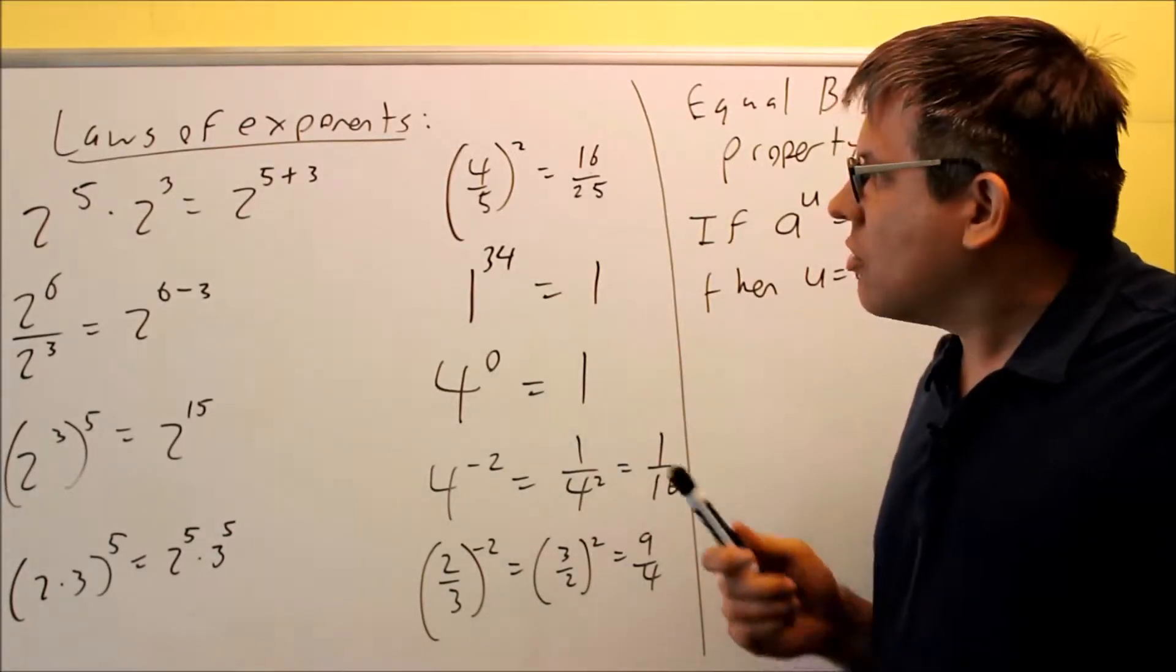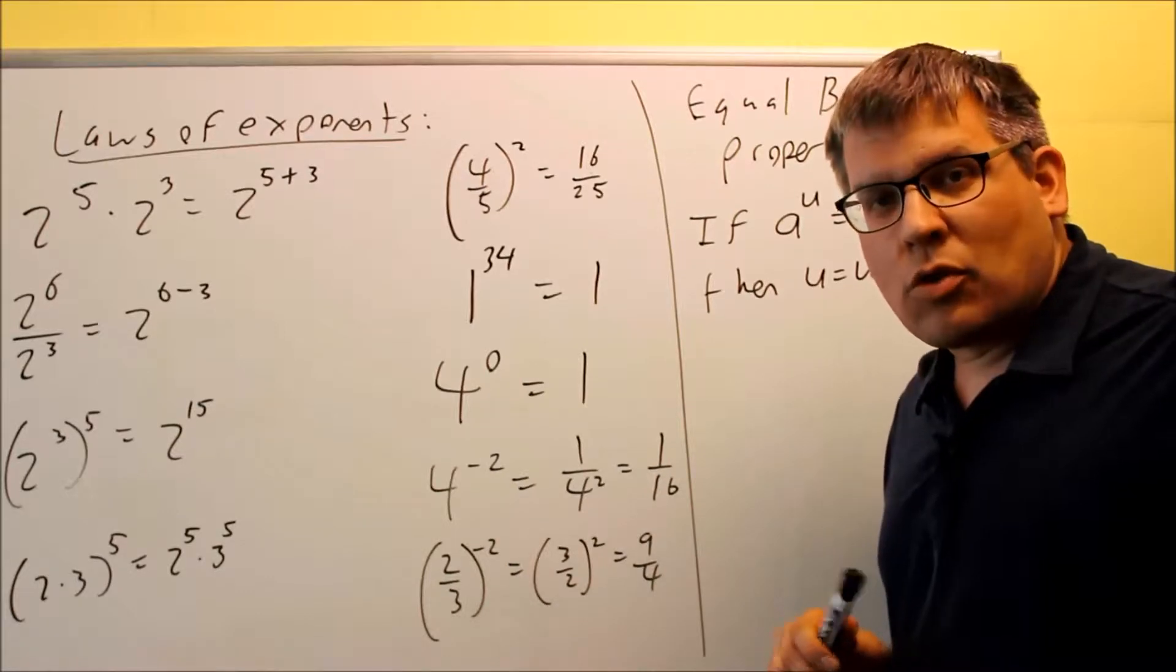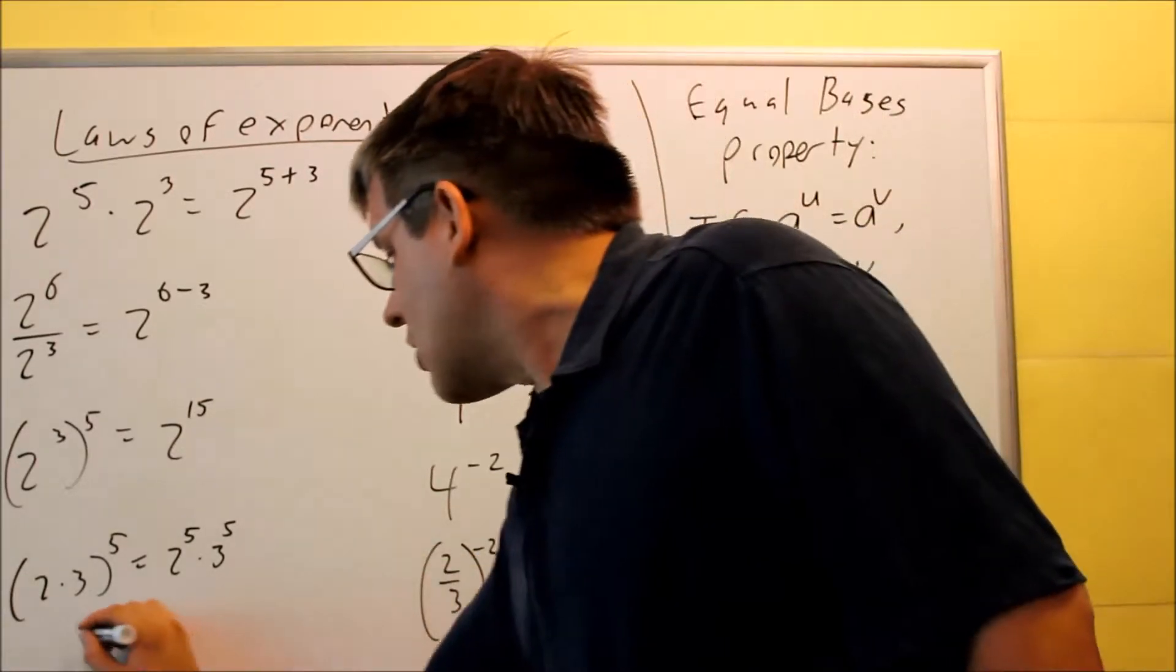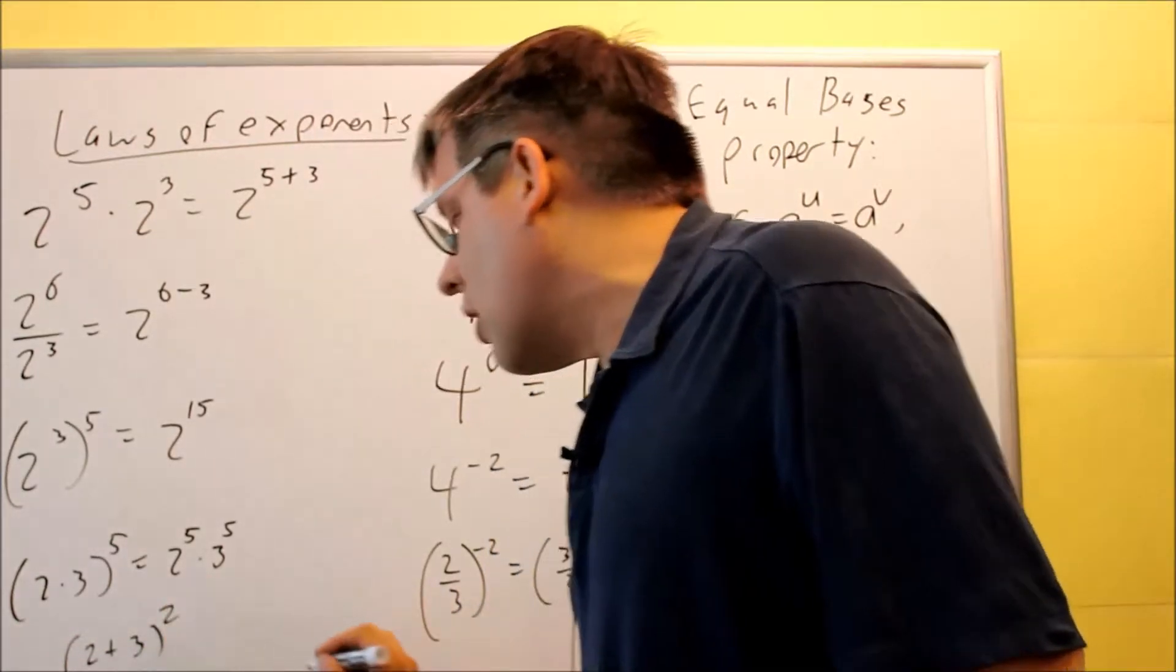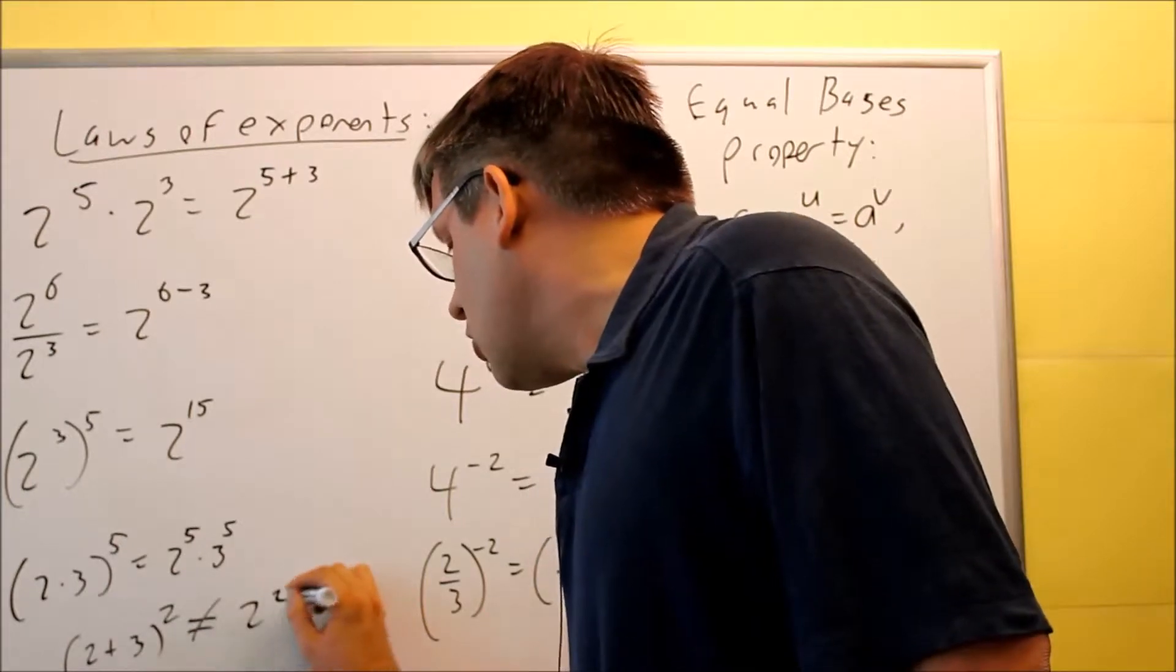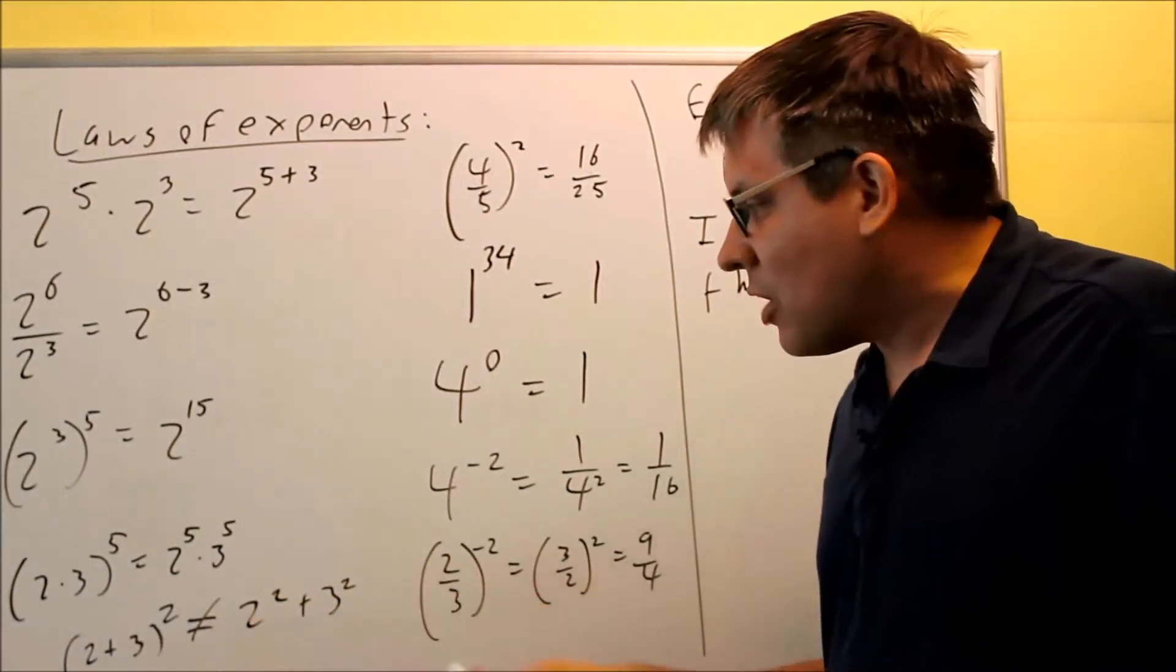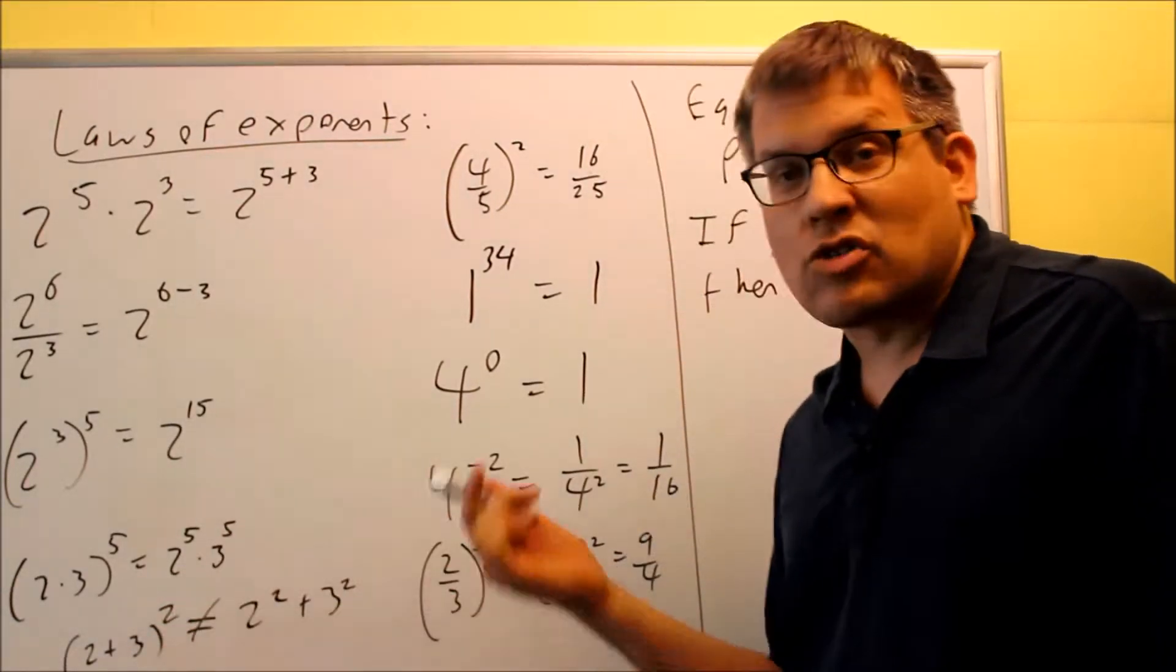What does not work here is you're not allowed to take the sum or the difference of two numbers and then square them. So in other words, if I have something like 2 plus 3, and that's squared, that is not equal to 2 squared plus 3 squared. I'm not allowed to do that because if I were to work this part out separately, I would get 5 squared, that's 25.